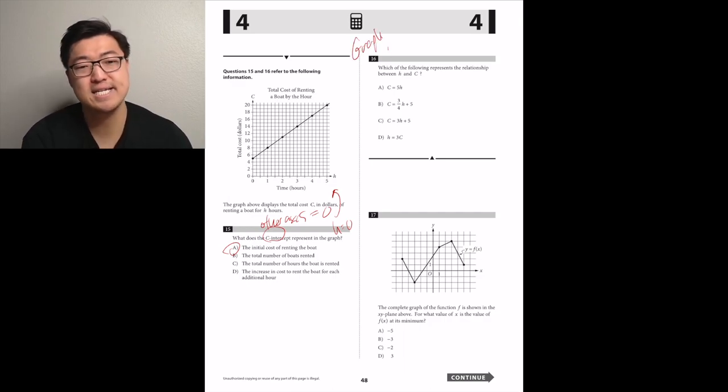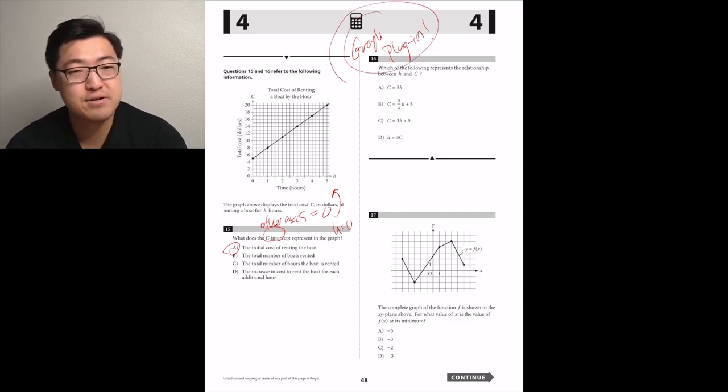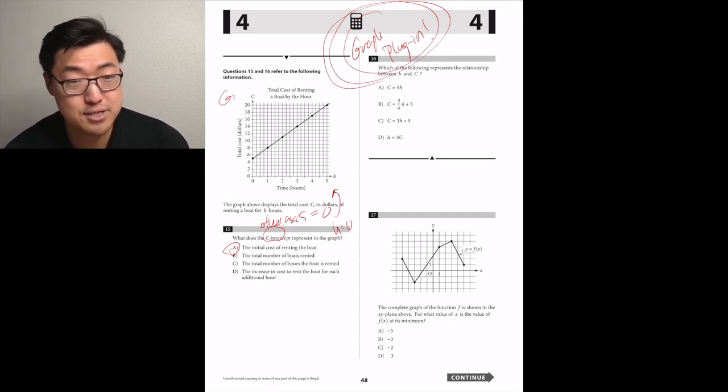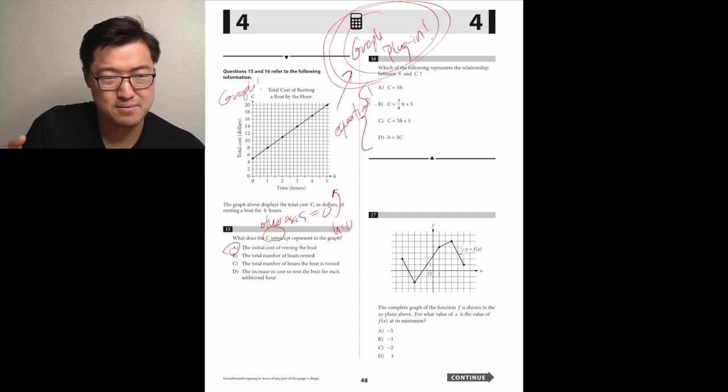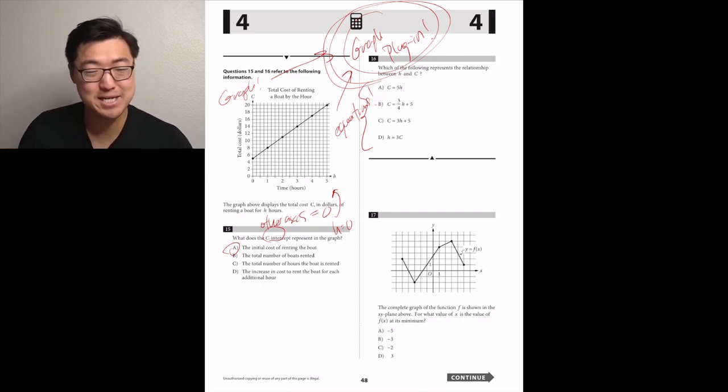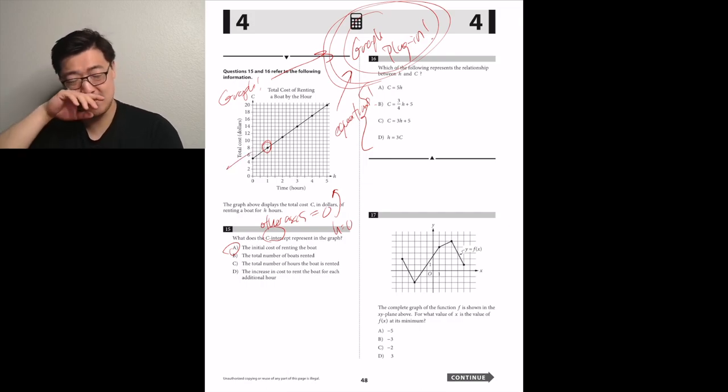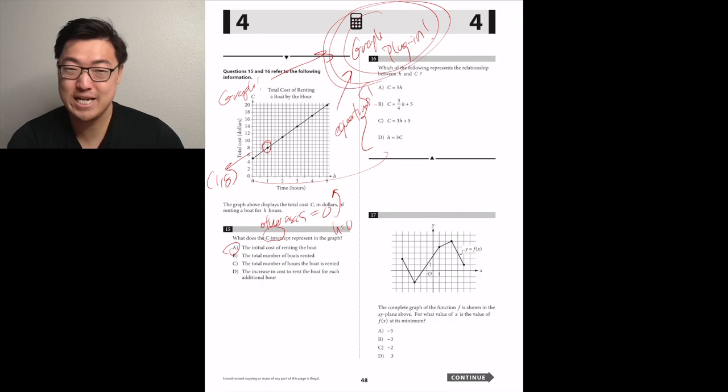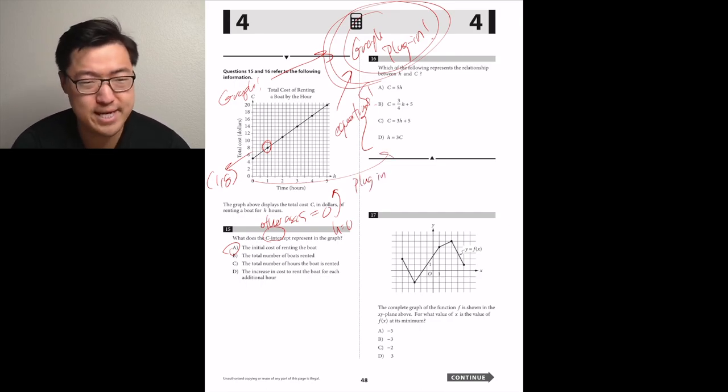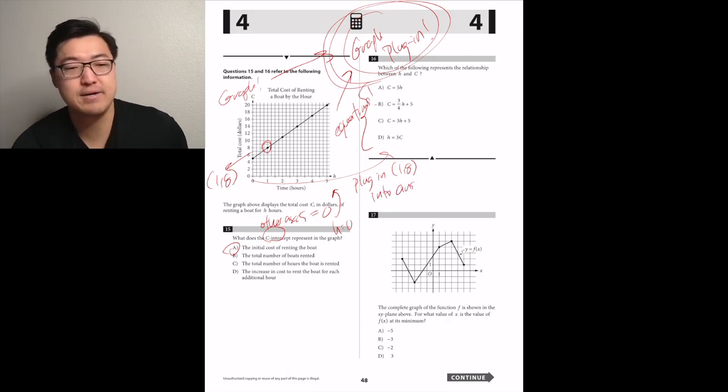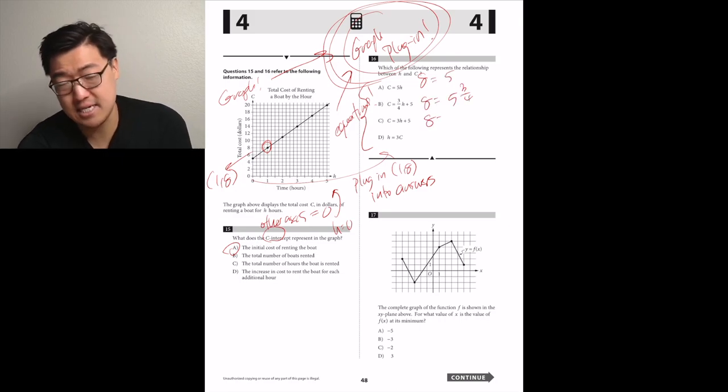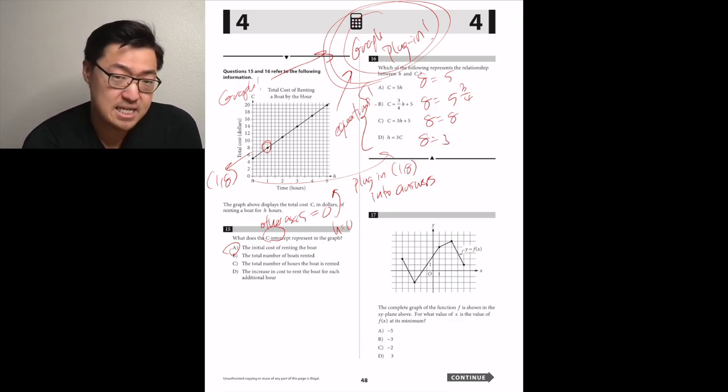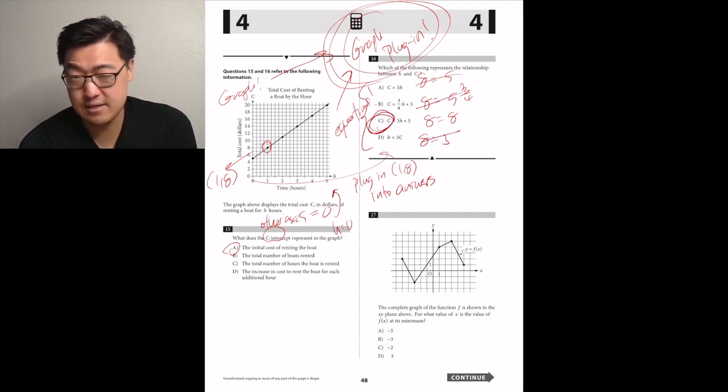Which of the following represents the relationship between H and C? Always use graph plugin when they allow you to. If they give you a graph plus equations, you take a point from the graph and put it into the equations. And then you don't have to get worried about being tricked by the weird labeling of this graph. The x-axis goes in units of fourths, so every four boxes is like an increase of one. Whereas the y-axis goes up by units of one, where each box is a unit of one. So this graph is not going to look at all like how it's being presented to us. I'm just going to pick a point like maybe 1, 8, and then plug that into the equation. So H is 1, C is 8. Let's see which one gives us a true answer. A is going to give us 8 is equal to 5. Not true. B is going to give us 8 is equal to 5 plus 3 fourths. Not true. C is going to give us 8 is equal to 3 plus 5. True.